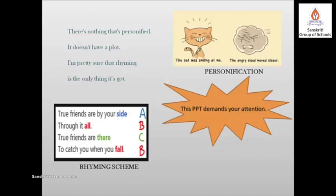The child is happy that at least he has got the rhyming correct in the poem, if nothing else. What is a rhyme? A rhyme is a repetition of similar-sounding words — it brings out rhythm in poems when we read them. The child is sure he has got his rhyme in place.